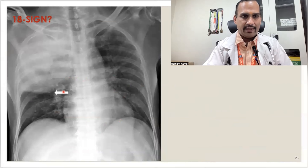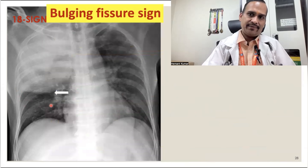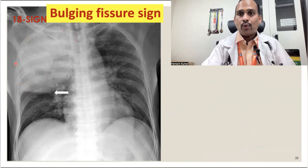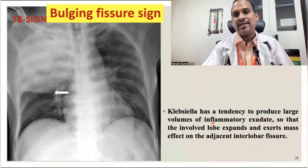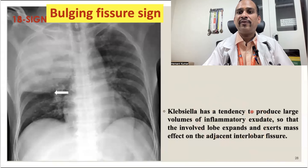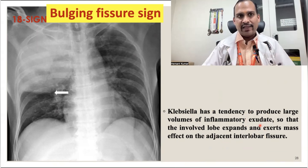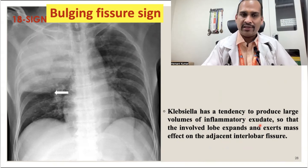Sign 18 is the bulging fissure sign. There is bulging of the minor fissure due to overfilling of the right upper lobe consolidation. Because of consolidation, the minor fissure bulges downward. This is typically seen in Klebsiella pneumonia, because Klebsiella produces a large volume of inflammatory exudate that pushes the minor fissure downward. Previously it was common, but due to potent antibiotics, it is not seen as commonly nowadays.